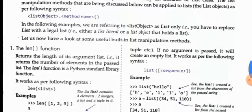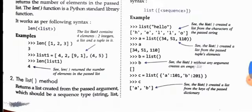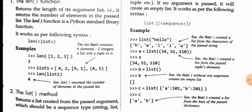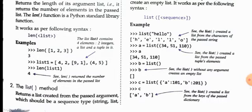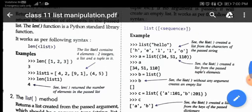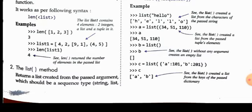Now let's look at list functions and methods. The first is the len() function, which returns the length — that is, the count of elements in the list. For example, len([1, 2, 3]) returns 3. For the list l1 = [4, 2, [9, 1], 4, 5], the length is 4 because [9, 1] is treated as a single element.